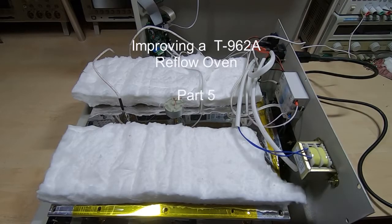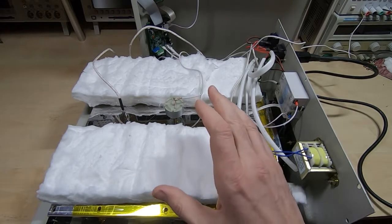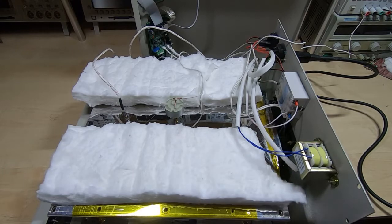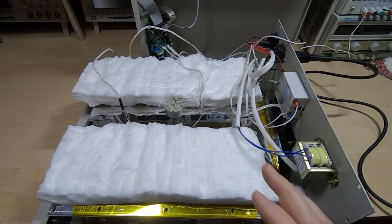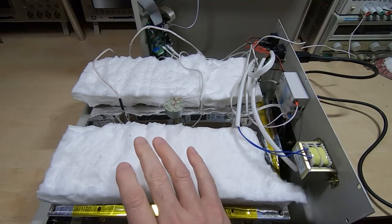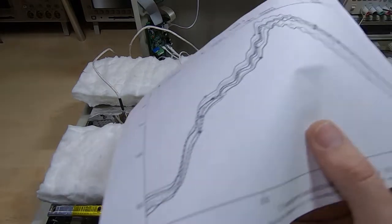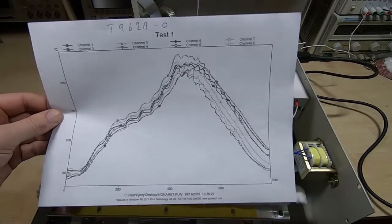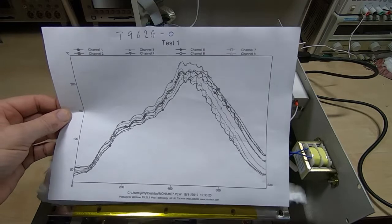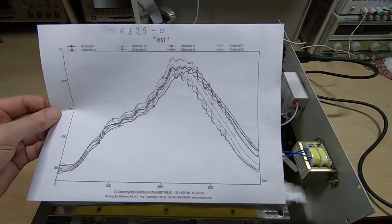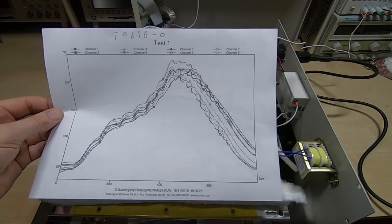This is part five in a series of videos in which I'm trying to improve the performance of this T962A reflow oven. In the previous videos I've tried various different methods for improving the profile. When I started the project, this is the results I was getting from the instrumentation card I'd made, which is nothing more than a bare PCB with eight thermocouples attached to it.